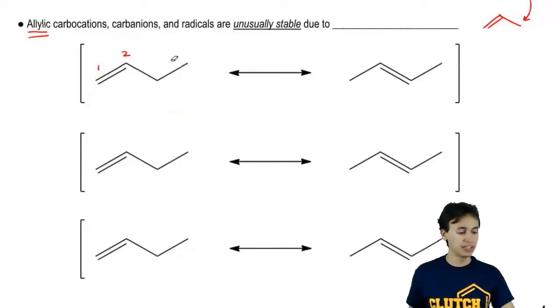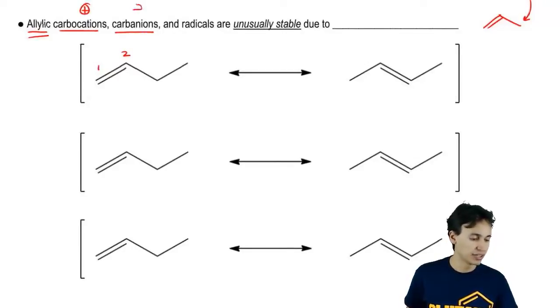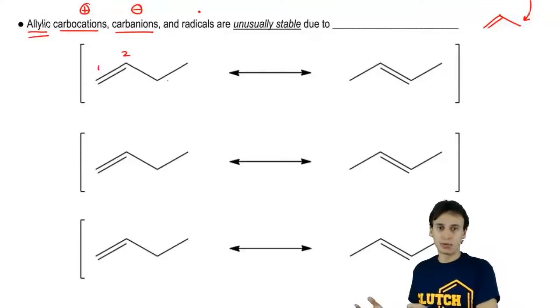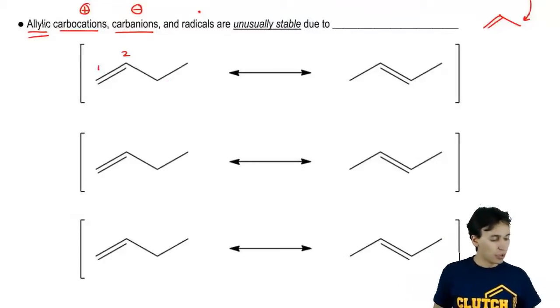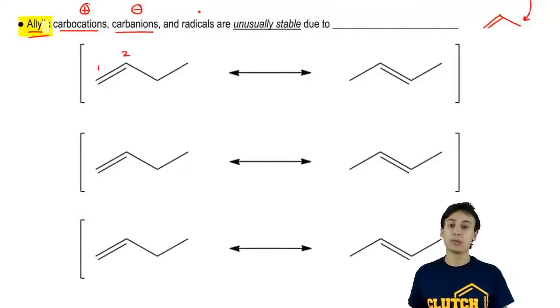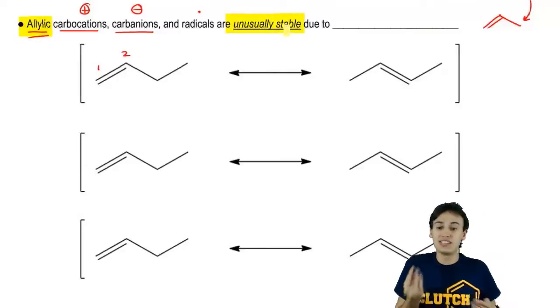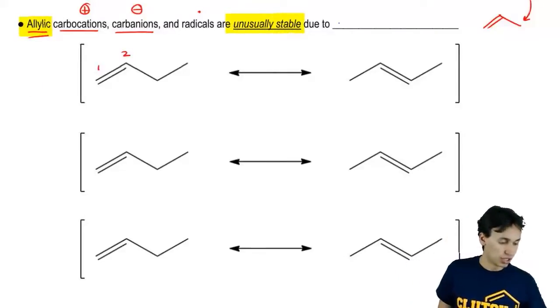What that means is that typically carbocations, carbanions and radicals are usually unstable. Usually we say these are reactive intermediates. They don't like to form but when they're paired with double bonds on the allylic positions, they become unusually stable due to conjugation.